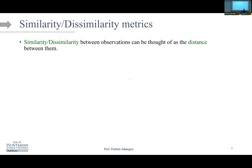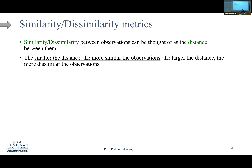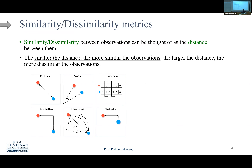Some metrics are higher when observations are more similar; others are higher when more dissimilar. Similarity between observations can be thought of as distance — the smaller the distance, the more similar; the larger, the more dissimilar. These distance metrics can be used in any clustering method: k-means, hierarchical, density-based, and others. We've seen Euclidean distance, which for two features x and y is the square root of x squared plus y squared.